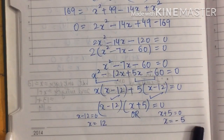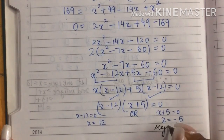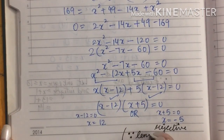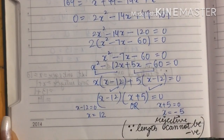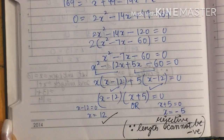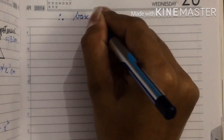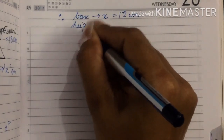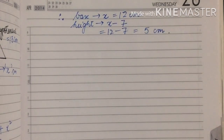Now decide which value is correct. x equals minus 5 is not possible because x represents a length and length cannot be negative. Therefore x equals 12 is the correct answer. Using this: the base, which was assumed as x, is 12 centimeters. The altitude was x minus 7, so this will be 12 minus 7 equals 5 centimeters. This is your answer.